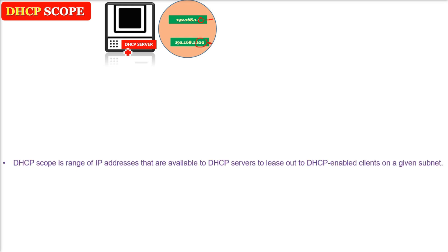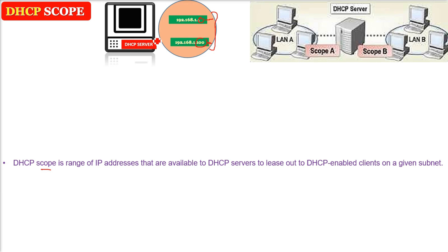DHCP scope — what is DHCP scope? In one line, it is the start and end of the IP addresses which a DHCP server has, that it can lease to the clients. DHCP is all about offering the network configuration parameters to new computers joining and existing computers in the system. So scope is the range of IP addresses, the pool of IP addresses that DHCP can offer to different clients.